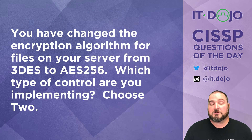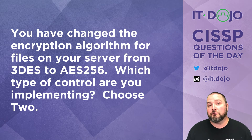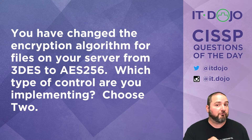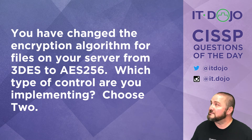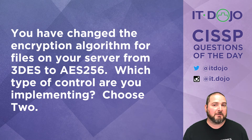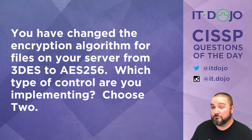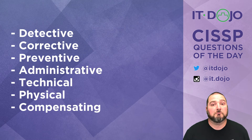Question number two: you have changed the encryption algorithm for the files on your computer from Triple DES to AES-256. Which type of control are you implementing? I want you to pick two. There are your answer choices — pick two of them when you're ready.